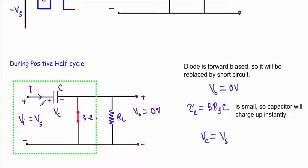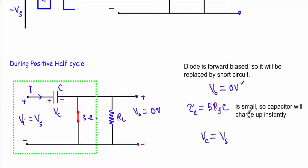Now what will be the charging time of this capacitor? The forward resistance of the diode is zero, therefore tau_c equal to 5 R_F C will be very small, so I can conclude that the capacitor will charge up instantly after application of input voltage plus Vs in positive half cycle. Therefore I can write Vc equal to Vs, because there is no other voltage absorbing element in this region. So at the end of the positive half cycle our output voltage will be equal to zero and our capacitor voltage will be Vs.